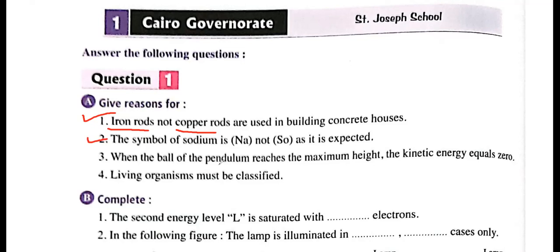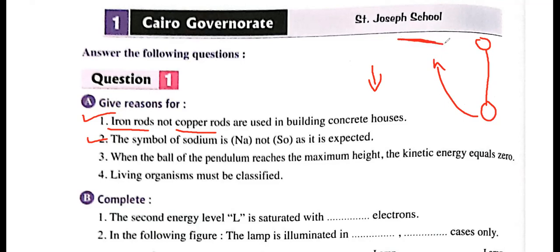When the ball of the pendulum reaches the maximum height, the kinetic energy equals zero. Think about this: here we have the string and the pendulum. As the pendulum goes up, its speed will decrease. Until it reaches the maximum height, the speed equals zero. Velocity — which is the speed — equals zero at the maximum height.